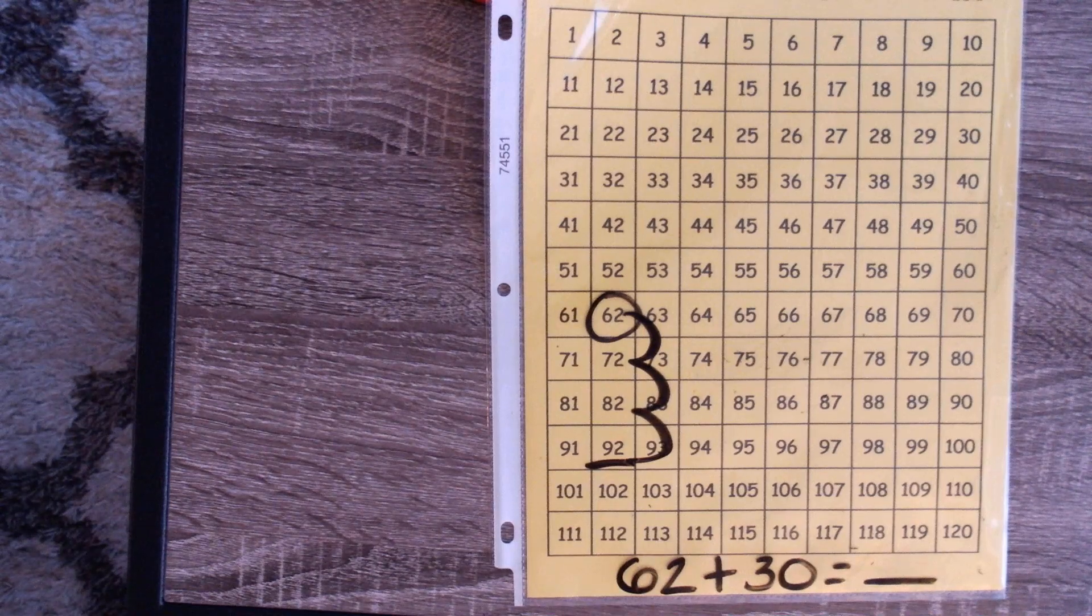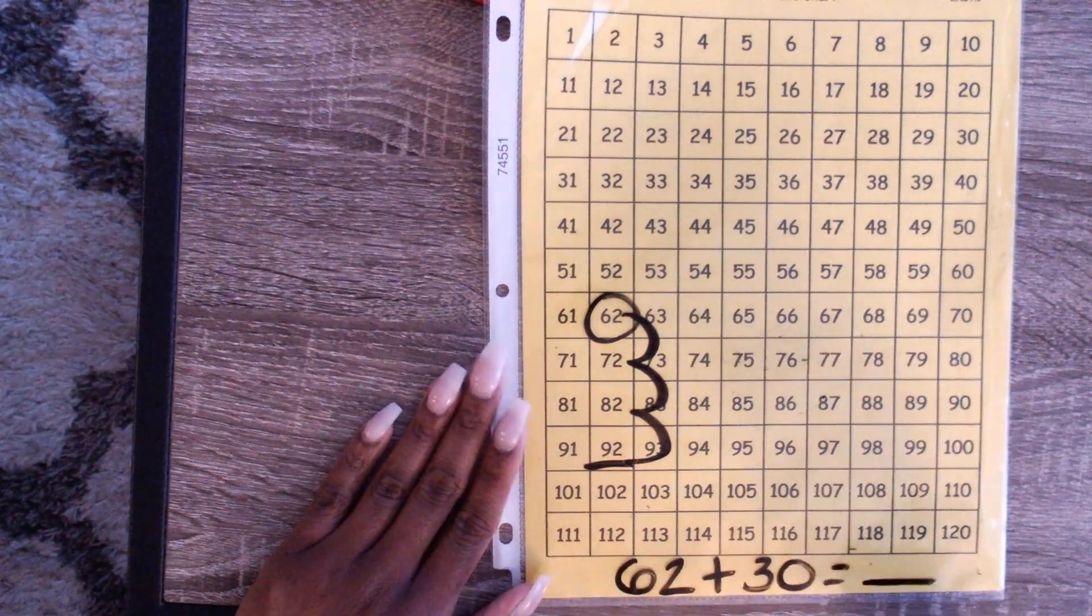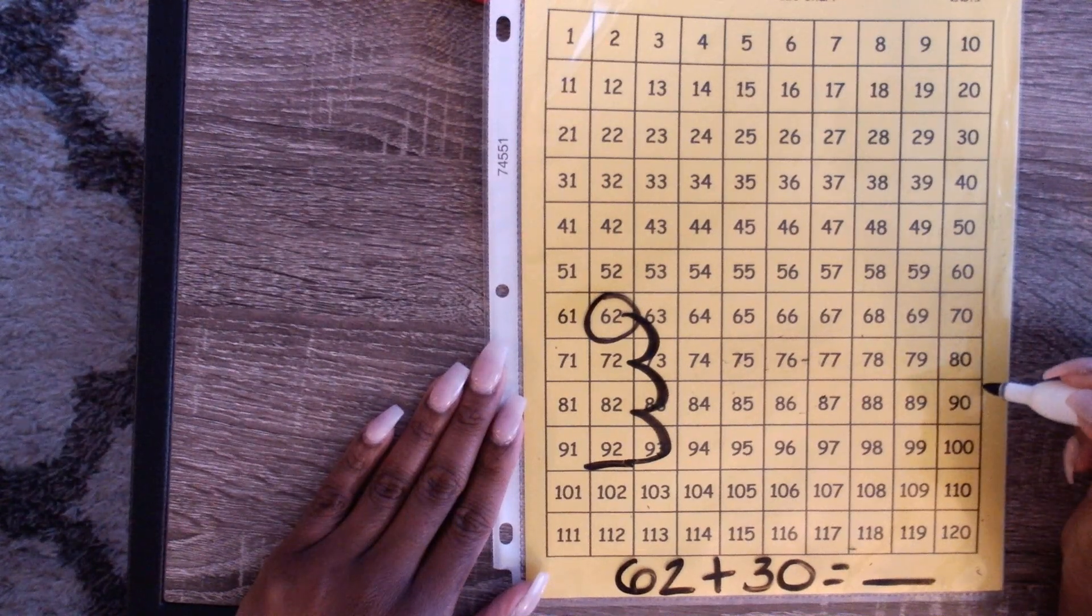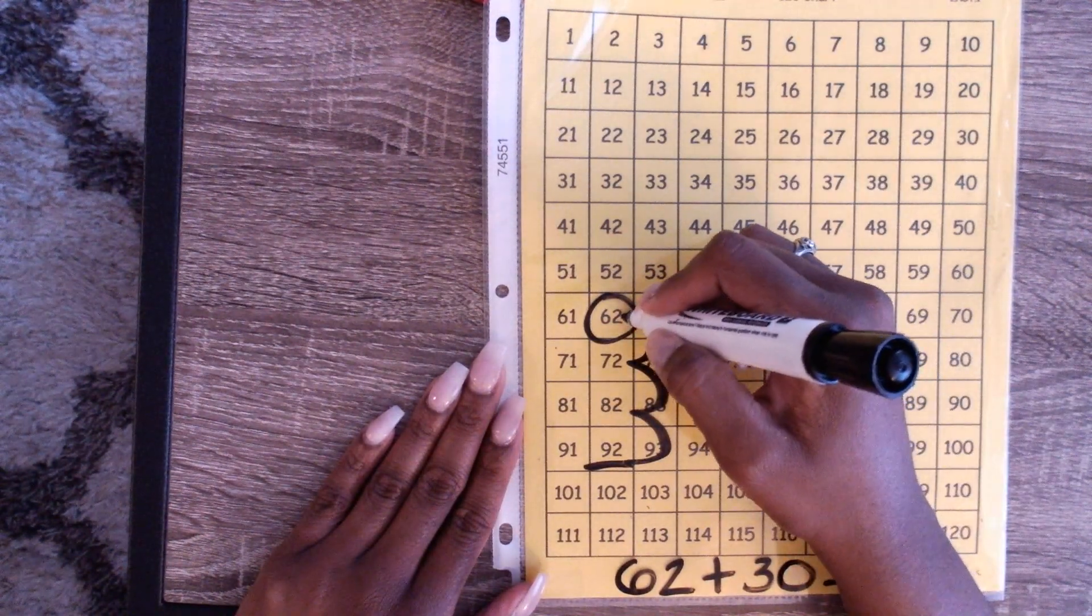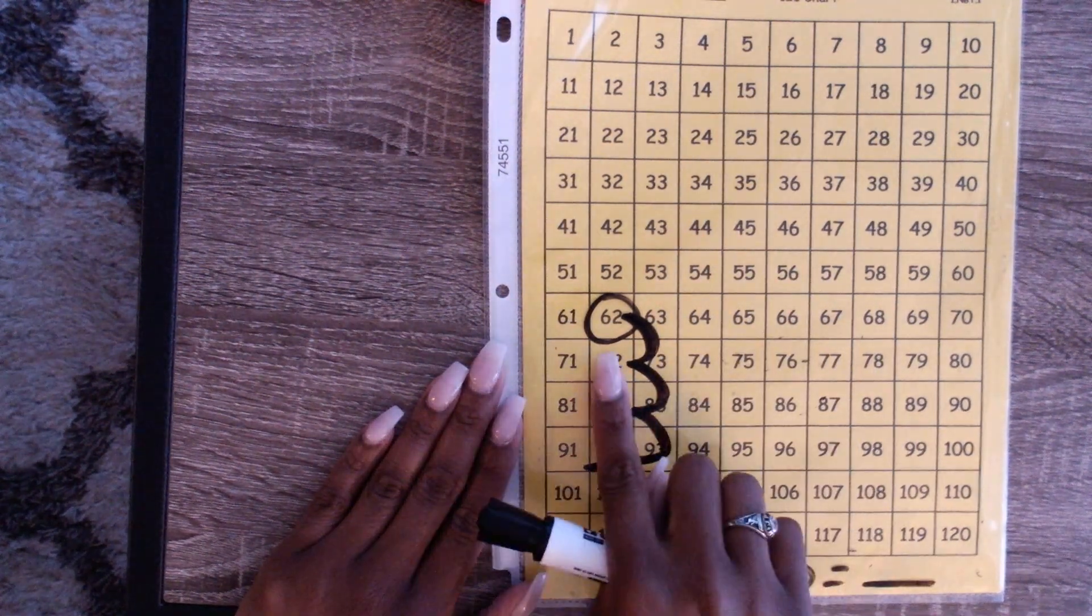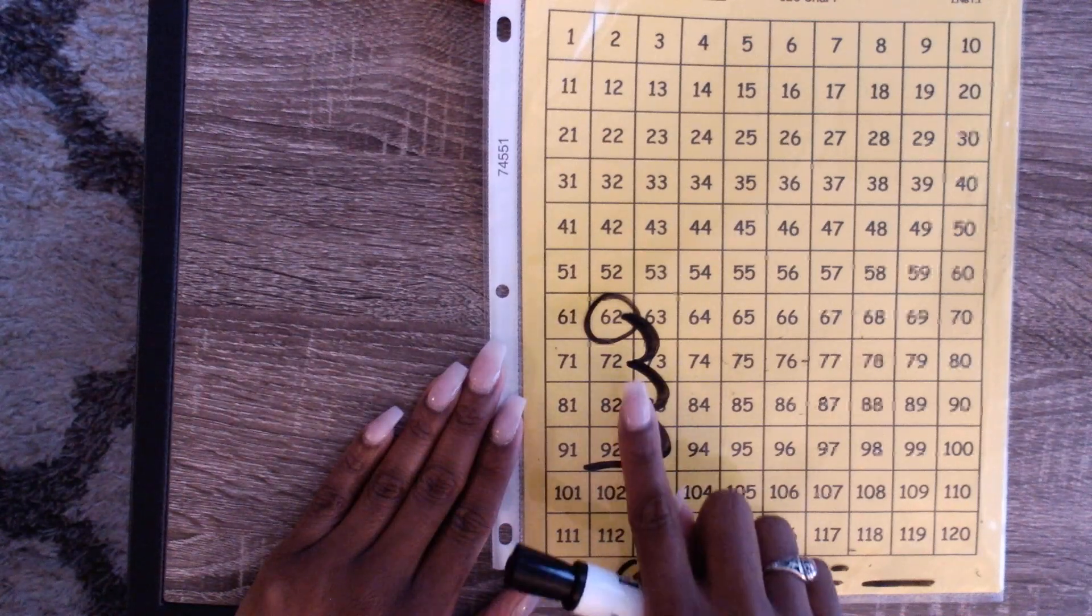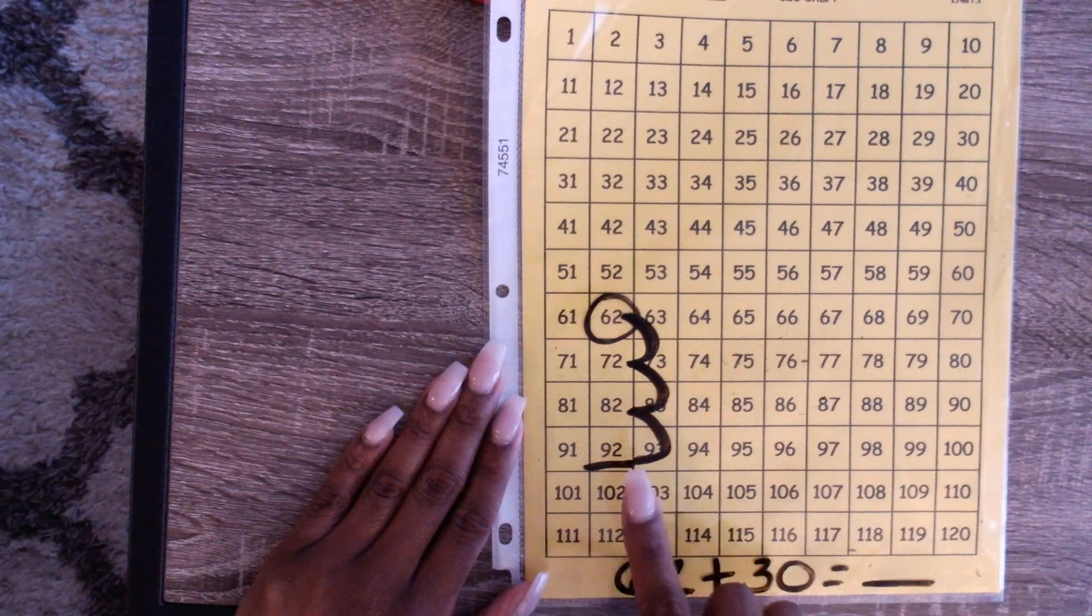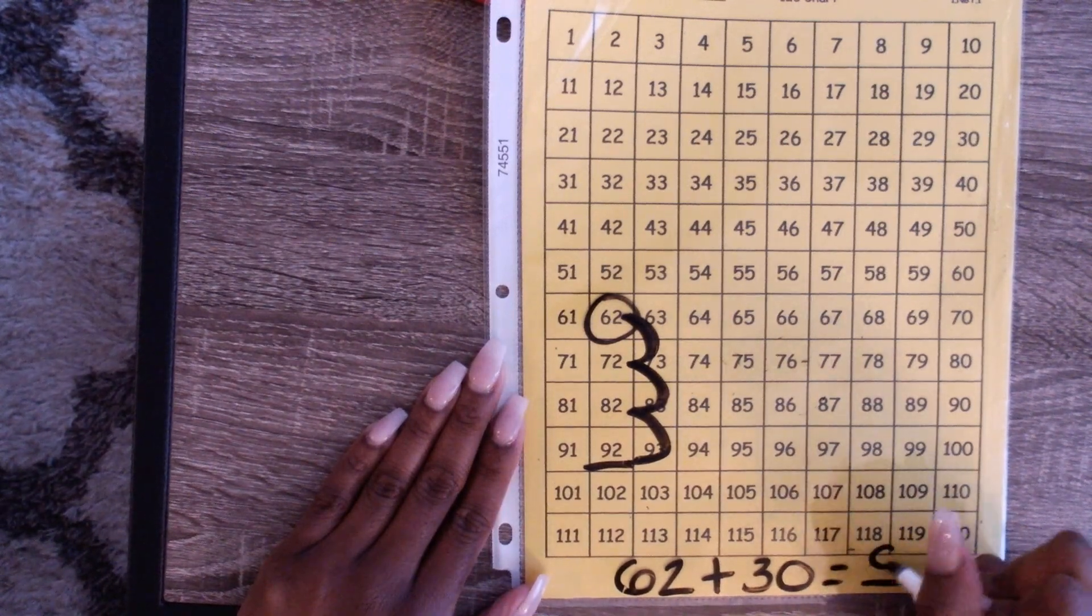We're adding 3 tens, so watch: 10, 20, 30, and we landed on the number 92. Do you see how easy that was? You're just hopping up or down. We're hopping by 10, so every time you go down a row you're going 10 more. Let's try that again: 10, 20, 30. Started at 62, I hop down three. The numbers go by tens: 72, 82, 92. So we know that 62 plus 30 equals 92.